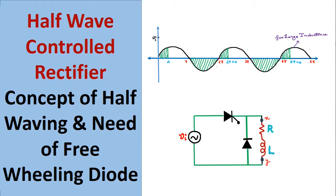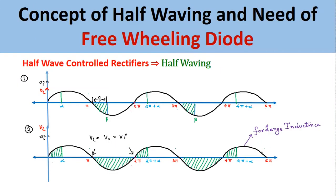First we are going to see the concept of half waving. The phenomena of half waving is only seen in the half wave control rectifier with inductive load or RL load. It is not seen in the half wave control rectifier with resistive load.